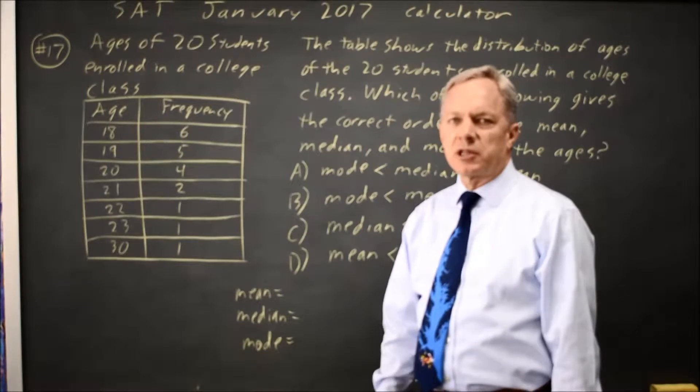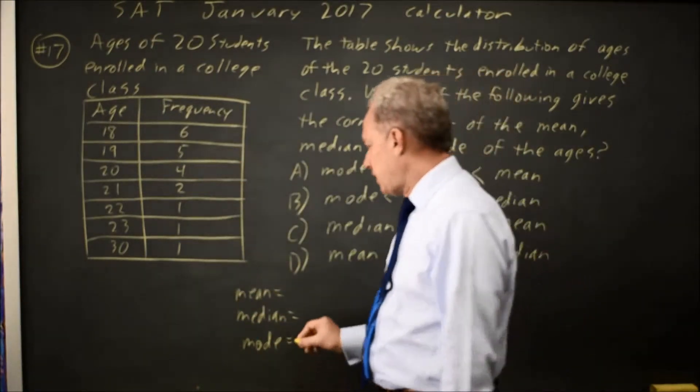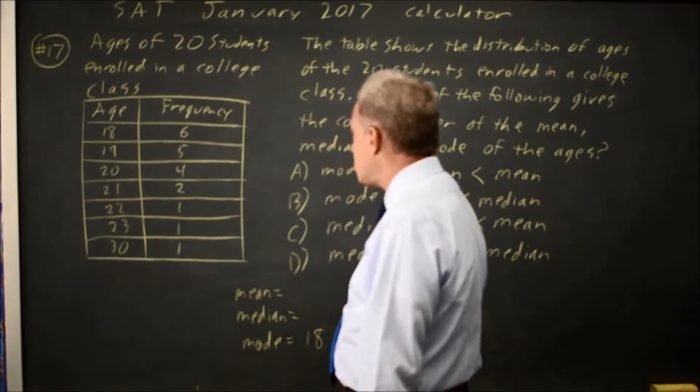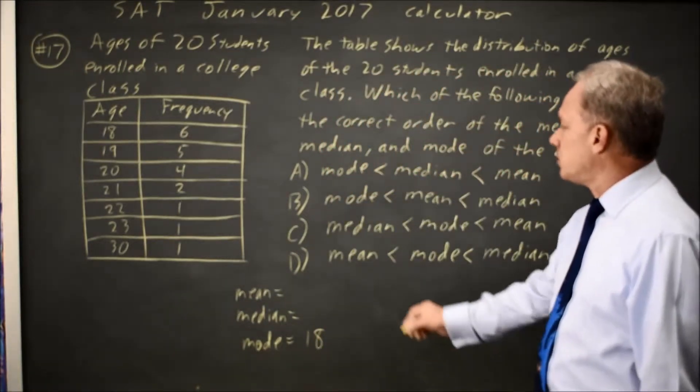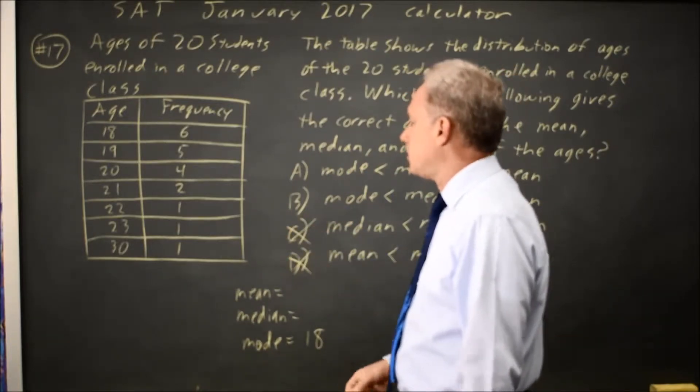We know the mode is the number that appears most often, and the mode for these ages is 18. Since that's the lowest number that appears, we know the mode has to be the smallest of the three. Choices C and D are wrong.